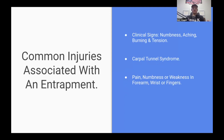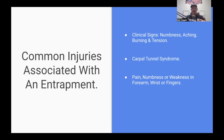Some common injuries are associated with an entrapment of the median nerve. A very important clinical sign of nerve entrapments is going to be numbness, aching, burning, and tension — those are really your key history points for finding out what's going on. I covered this in the very first video in this training series. These symptoms really scream out to me, and then the symptom location gives me an idea of where exactly that nerve entrapment is happening.